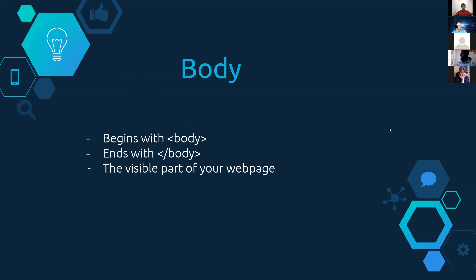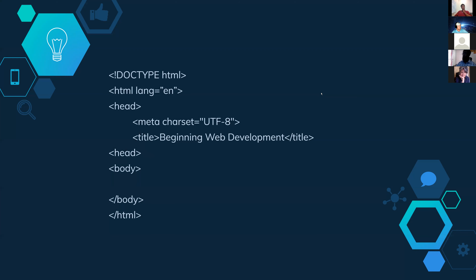The next part — some might argue the most important — is the body. This is the actual visible part of your webpage, what actually gets rendered to the website and what people will most likely be interacting with. Out of everything we've done, that's our full HTML document at its basic core. Even more basic than this, you can remove the meta tag — you don't even need a title or the lang equals EN attribute. But for what we're going to do and probably what you'll do in the future, this is the core of what you're using.